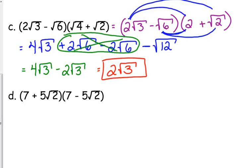Now let's look at a special case of a binomial times a binomial. Relating this to factoring — what does it look similar to? The difference of perfect squares. What do we know is true about the difference of perfect squares? When we multiply it out, the middle terms always cancel — the outside and the inside cancel. That's going to happen here. For the sake of this example, I am going to write it all out, but I wanted to see if you noticed that pattern.